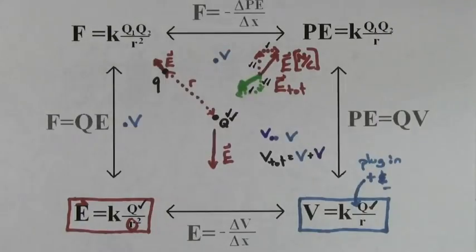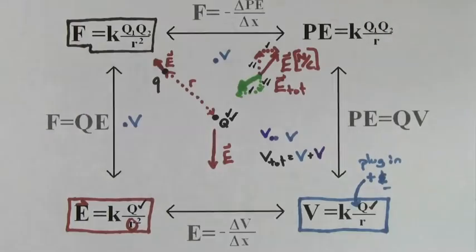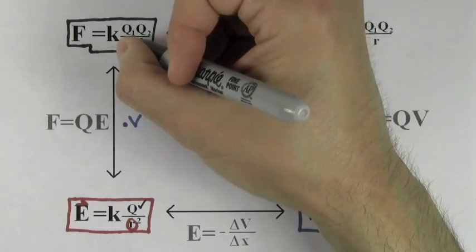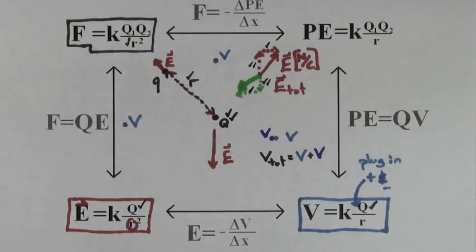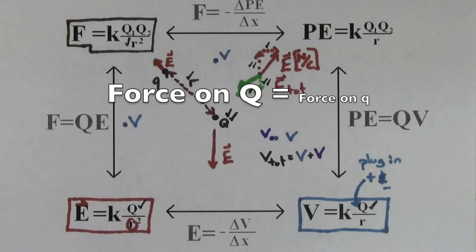If you place an additional charge into this diagram, you'll get an electric force equal to KQQ over R squared. R here refers to the distance between the two charges that are interacting. Note that even if one charge is very big and one charge is very small, they will still exert equal and opposite forces on each other because of Newton's third law.